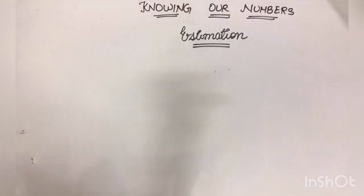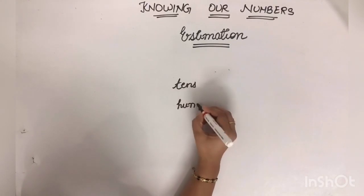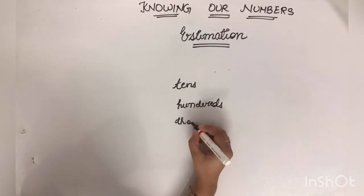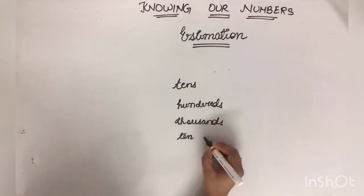Now we can round off the value to nearest tens, hundreds, thousands or 10,000.